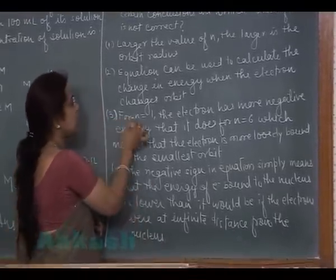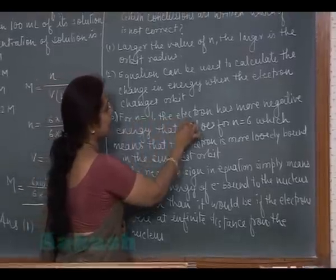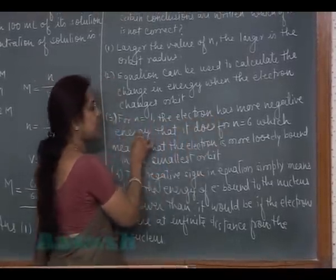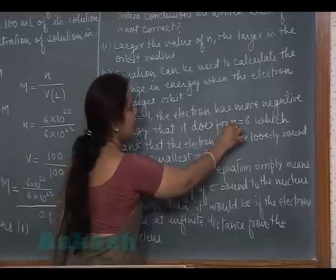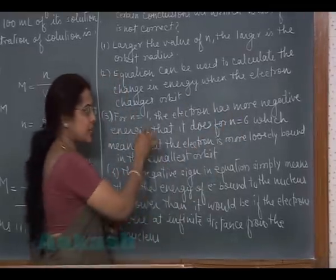The third statement is: for n = 1, the electron has more negative energy than it does for n = 6. That is correct.